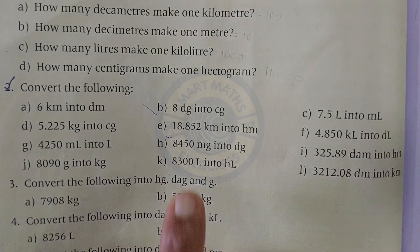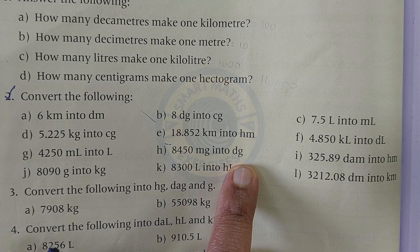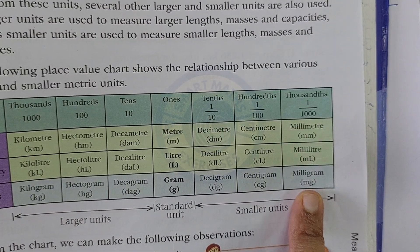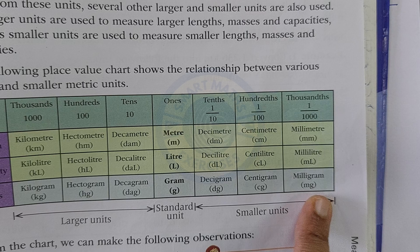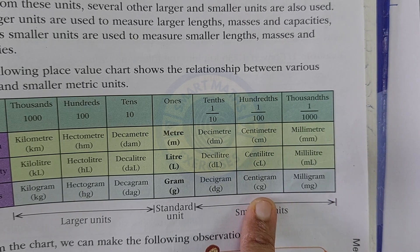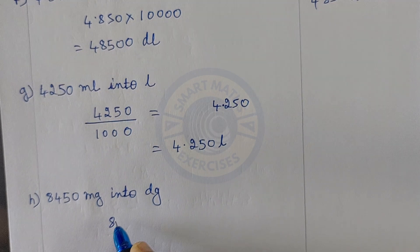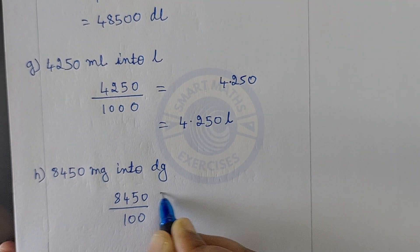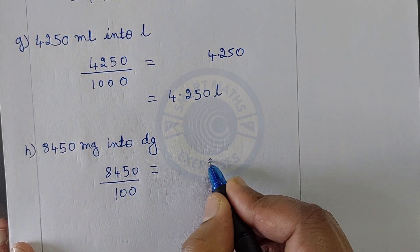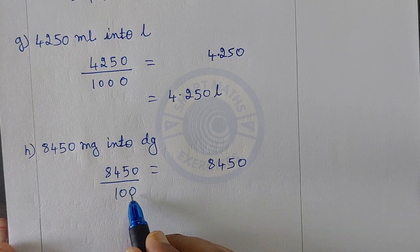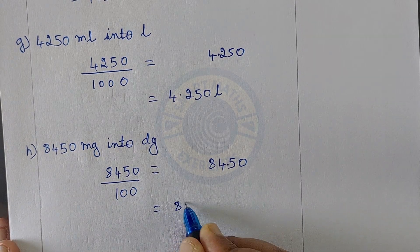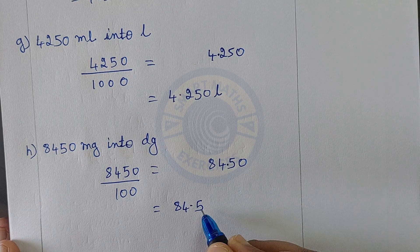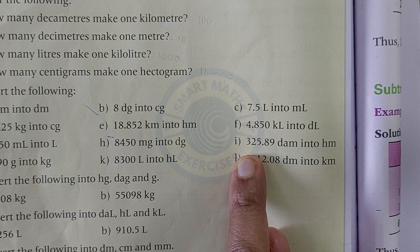Convert 8450 mg into decigrams. We are converting from milligram to decigram — smaller to larger — so we divide. Milligram to centigram is 10, centigram to decigram is 100. Divide 8450 by 100. Count two zeros, place the decimal after two digits: the answer is 84.50, or 84.5 dg.